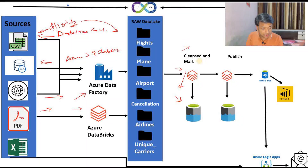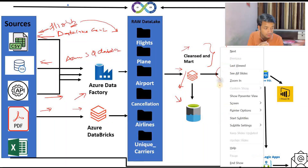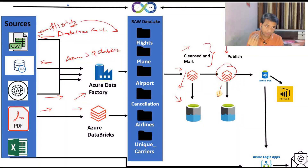After that, this is the business-facing side. Now we have to push only that data which needs to be exposed to end users. So I will be creating a publish layer with Azure Data Lake, and I will be saving the data that is very useful for end users into the publish container or publish data lake - also known as the gold layer, if you refer to the medallion architecture.